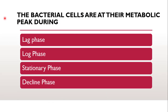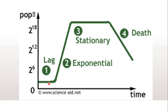Now the next question is: the bacterial cells are at their metabolic peak during which phase? As you all know the phases — lag phase, log phase which is also called as exponential phase, stationary phase, and decline phase. These are the stages of the growth cycle. In the lag phase there is no growth, the bacteria are getting ready for growth to start.